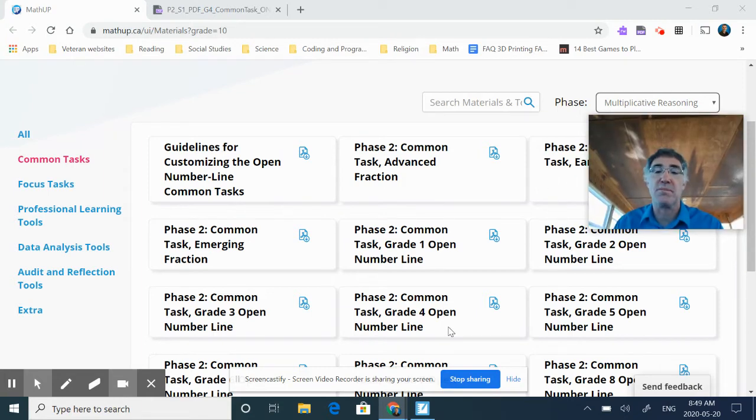And so we've jumped over to our common task. And I've chosen for today's purposes the common task for the grade four open number line. And the common task in the Math Up program is kind of that entry point to get an idea of what the students know, what they understand, have a general understanding of where they are at with the multiplicative reasoning. Once we see that maybe there's specific sections that they don't quite understand, that's where we jump over to our focus task. But for today's purposes, we're just going to look at the common task.